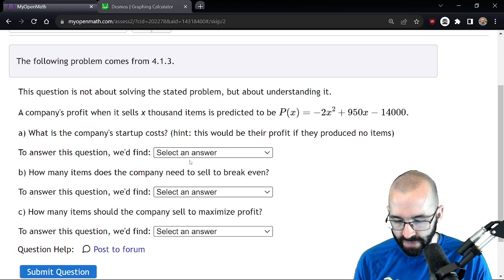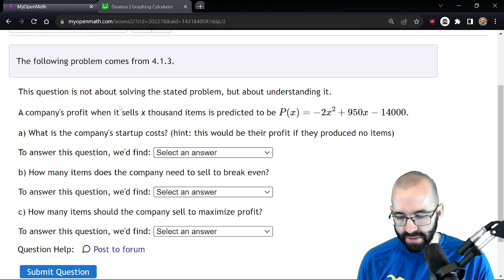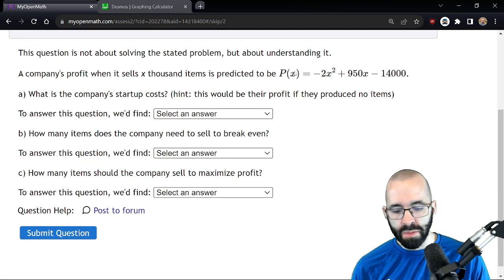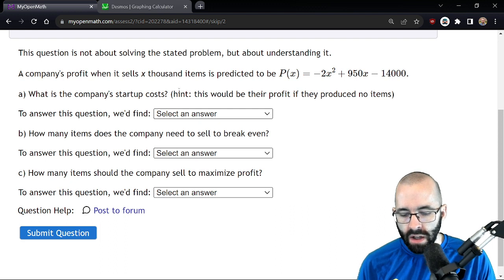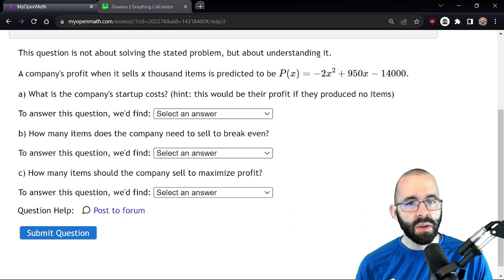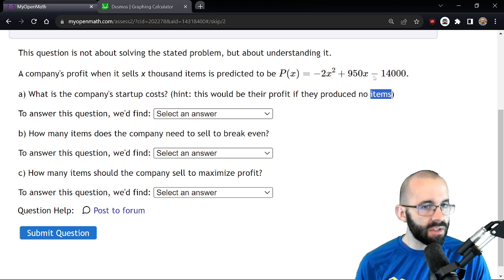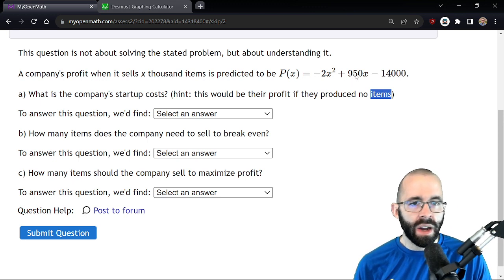All right, a company's profit when it sells x thousand items is this profit function. What are the startup costs? Startup costs is their profit if they produce no items. So we could answer the question: profit when no items are sold, that's going to be negative 14,000.